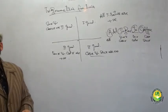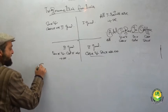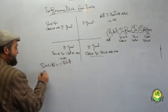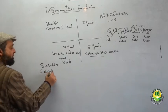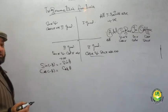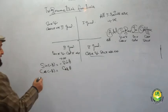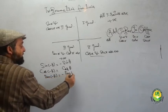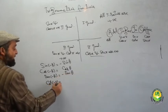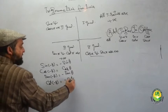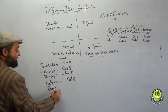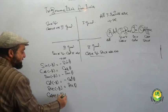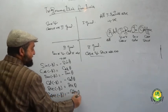For negative angles: sin(−θ) = −sin θ (minus does not get absorbed in sine, it comes outside). cos(−θ) = cos θ (minus is absorbed in cosine). tan(−θ) = −tan θ. cot(−θ) = −cot θ. sec(−θ) = sec θ. cosec(−θ) = −cosec θ.